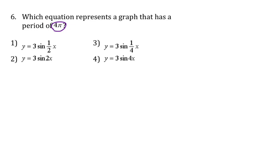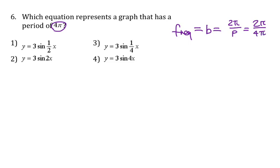Number 6: which equation has a period of 4π? If the period is 4π, we find the frequency b using b = 2π divided by period. So 2π divided by 4π gives one half. We're looking for something that has 1/2 as the coefficient of x, which is choice 1.